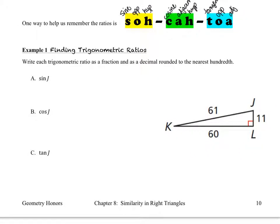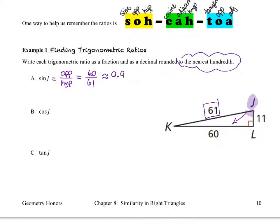In example number one, we want to write each trigonometric ratio as a fraction and as a decimal rounded to the nearest hundredth. Question A is sine of angle J. We're interested in angle J, and the sine of angle J — remember sine stands for the SOH part of SOHCAHTOA, meaning sine equals opposite over hypotenuse. The side opposite angle J is 60, and the length of the hypotenuse is 61. So the sine of angle J is 60 divided by 61, which rounds to about 0.98.